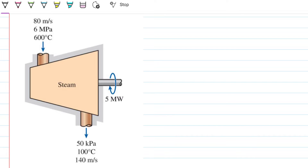Hello guys and welcome back to Engineering Hack, where we try to solve engineering problems in a way that's hopefully easy to understand. Today we're looking at a problem that combines pretty much everything we've been talking about in the past few weeks: the first law, turbines, XRG, entropy — all in one big package. Kinetic energy also plays a role, and obviously property tables and steam table analysis come into play too.